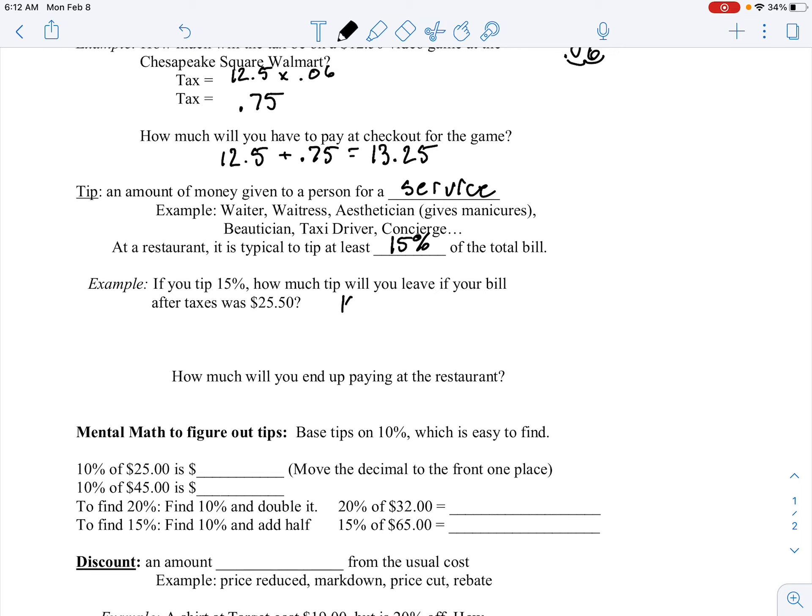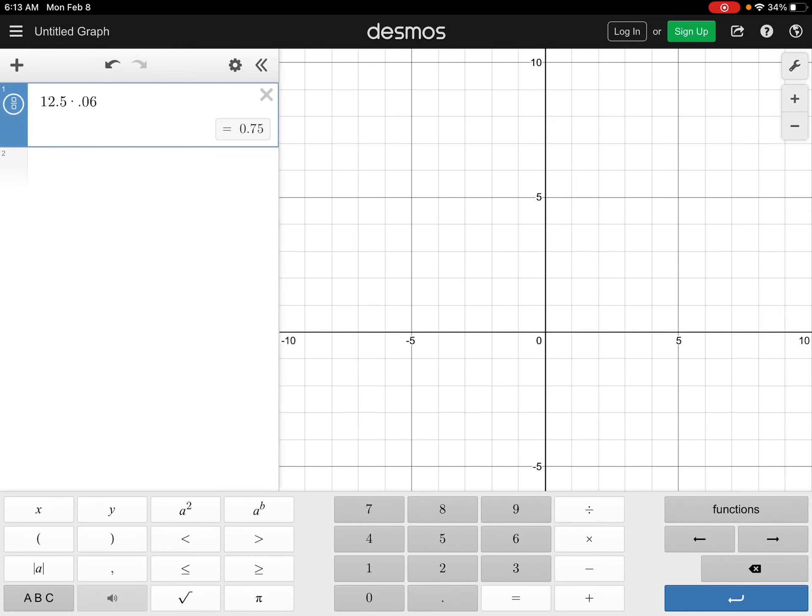Well, same type of thing. We're going to take our percentage and turn that into a decimal. Now we need to take that decimal and multiply it times the original amount. $25.50 times 0.15.